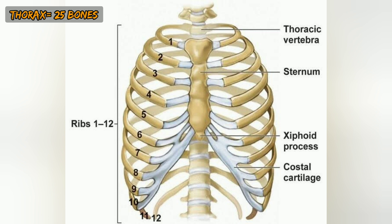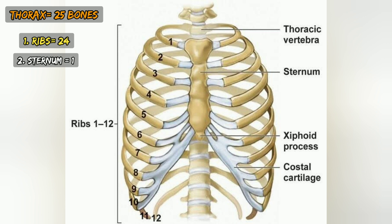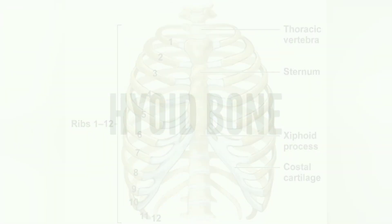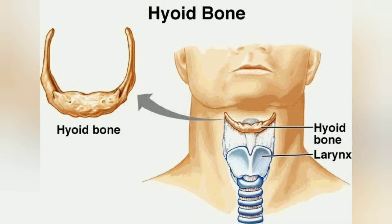The thoracic cage: there are a total of 25 bones. Each side has 12 ribs, so two sides give 24 ribs. For the attachment of the ribs, there is a bone in the exact center called the sternum. So 24 plus 1 gives a total of 25 bones in the thoracic cage.